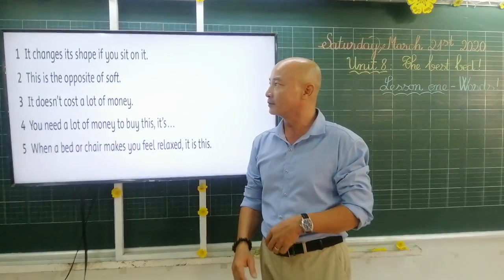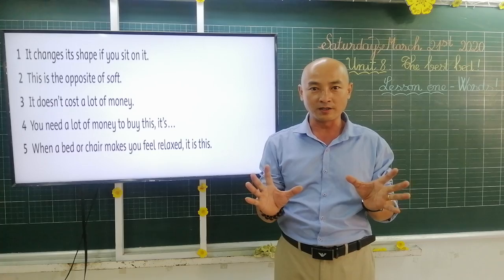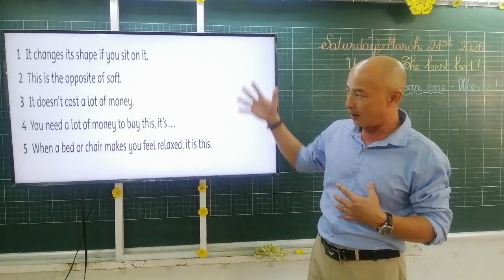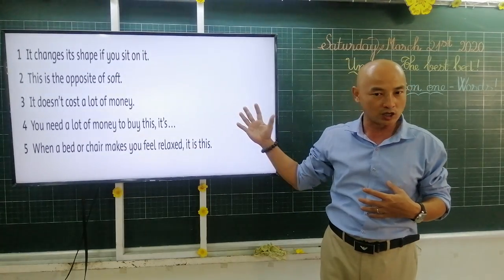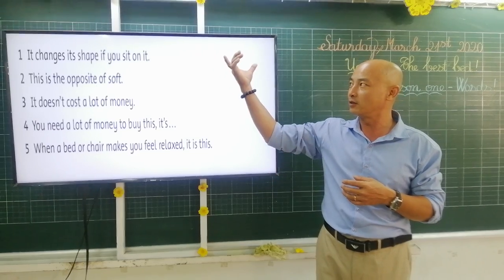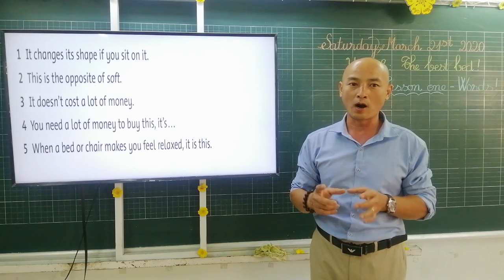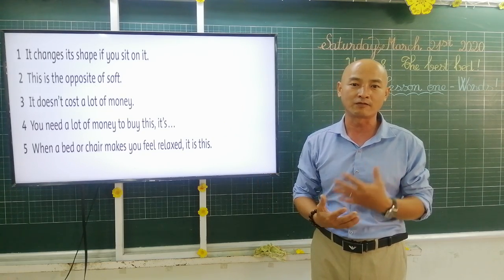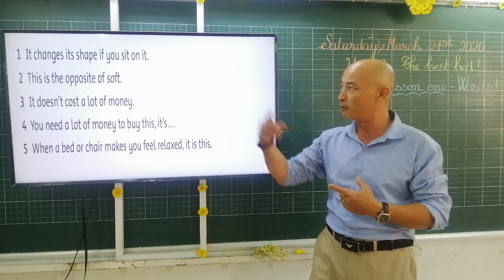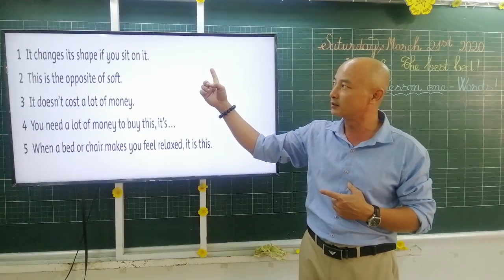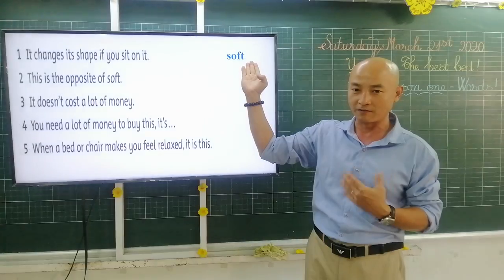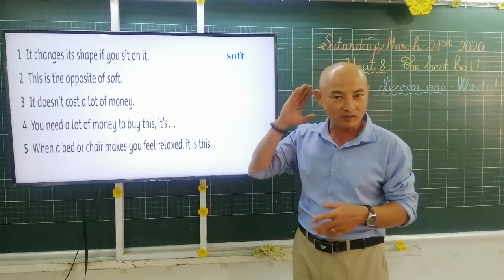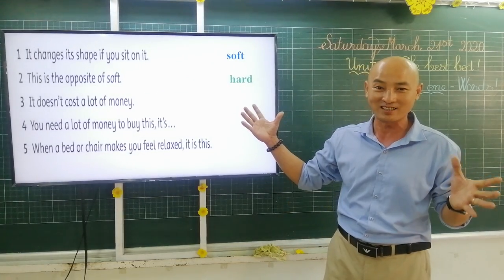Now after learning some words in this lesson, I would like you to practice and remember more words with this exercise. I will give you some definitions in English and some words you have just studied — try to remember the words and guess the correct definition. Number one: it changes its shape if you sit on it — that is soft. Number two: this is the opposite of soft — the answer is hard.